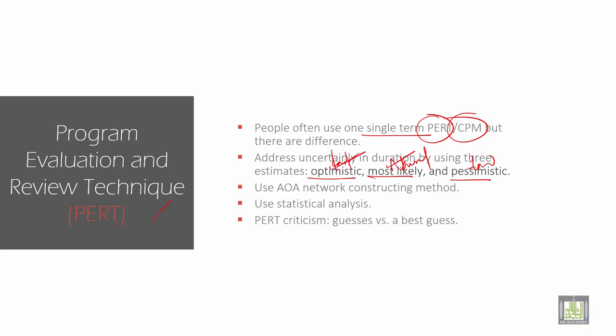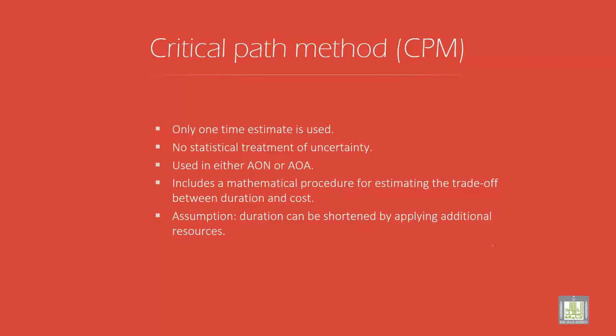We use AOA network, then statistical analysis. We use statistical analysis to analyze the method. And we use sometimes guesses and sometimes best guesses, because we use the path. You have to choose the path. You can see an example in the next slides.